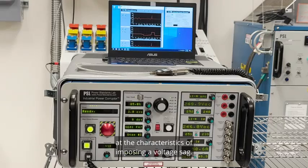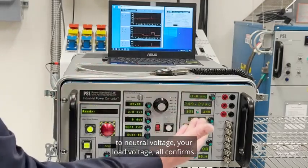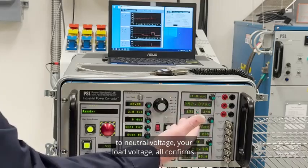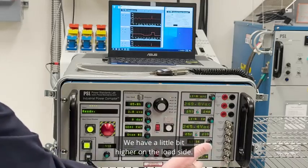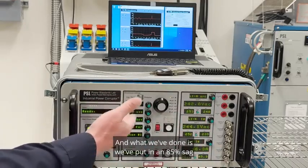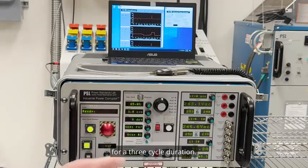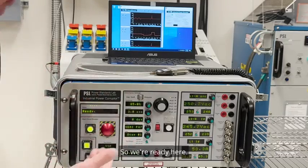What we have here, we've got your line to neutral voltage, your load voltage, all confirmed. We have a little bit higher on the load side. And what we've done is we've put in an 85 percent sag for a three cycle duration. So we're ready here.